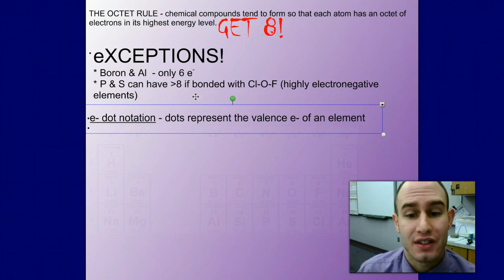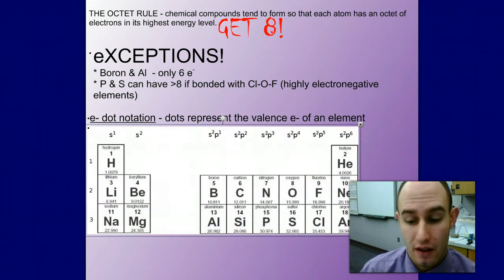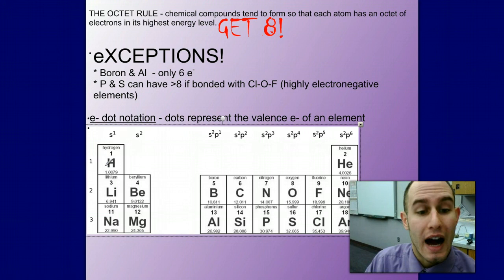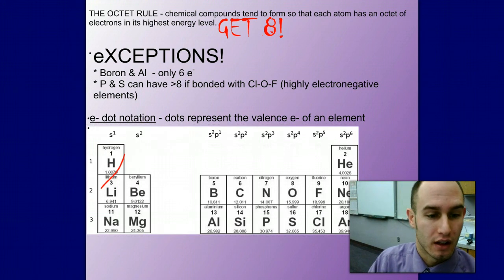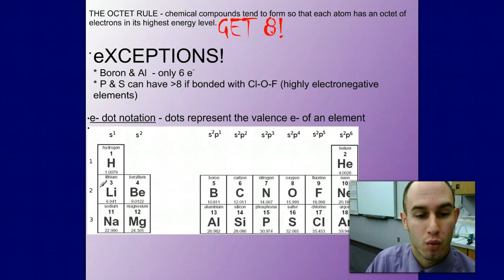Let's take a look at how to draw some of these and talk about electron dot notation. Basically, we are going to use dots to represent the valence electrons of an element. How we determine the valence electrons of an element is quite simple. On our periodic table, we have hydrogen in 1s. Hydrogen is going to have one valence electron. Any other element in group 1 is going to have one valence electron. This is 1s1, 2s1, 3s1. All of these guys in group 1 have one valence electron.